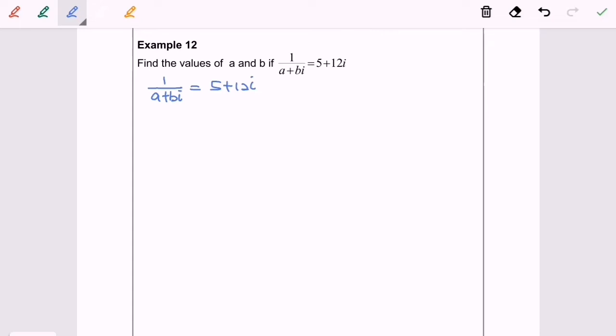So now we will have 1 over 5 plus 12i which equals a plus bi.